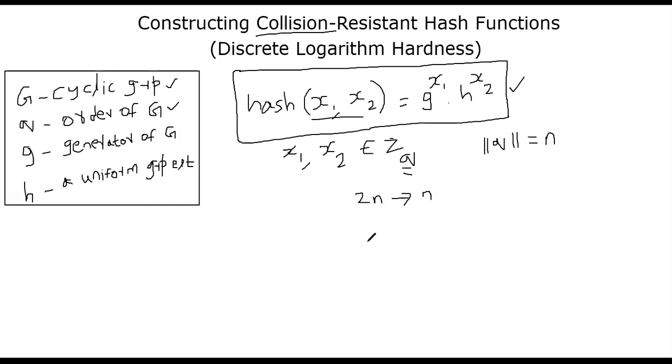So suppose you are able to find collision in our hash function, then you can actually solve the discrete logarithm problem. So let's quickly do that. Suppose magically you found out a pair that causes the collision, meaning hash of x1, x2 is equal to hash of y1, y2. So what does that mean?